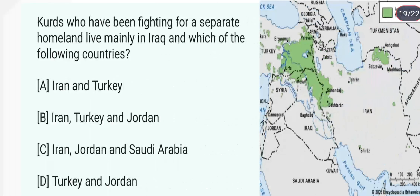Kurds, who have been fighting for a separate homeland, live mainly in Iraq and which of the following? Kurds kahan rehte hain? Ye Iraq, Iran, aur Turkey mein rehte hain. The answer is A. Kurds ki population 35 million hai.